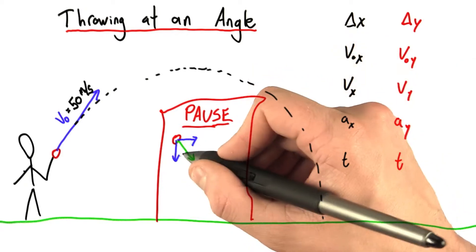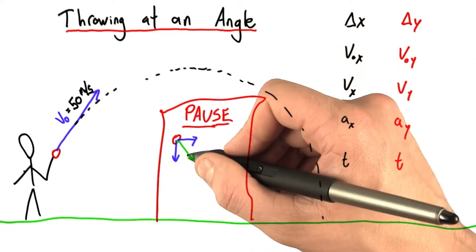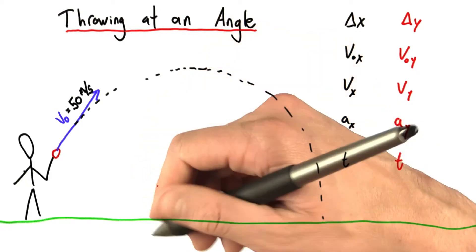In that case, we went from components to the true velocity. Now we're going to go the other way. So what do I mean by that?